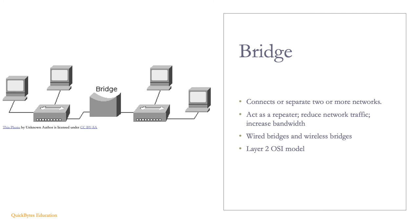Bridges can connect or separate two or more networks, which can increase or reduce the size of the network. Bridges can act as a repeater, extending the range of the network. They also reduce network traffic and increase bandwidth. There are both wireless and wired bridges, and they operate on layer 2 of the OSI model.